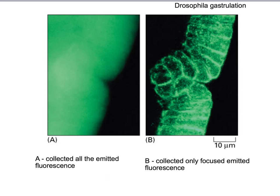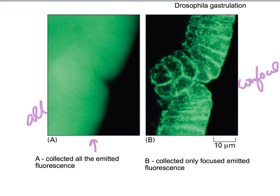Comparing wide-field fluorescence (collecting all emitted light) versus confocal (optical sectioning) shows a dramatic difference in image quality. The confocal image reveals clear internal structure, including what appears to be the invagination of the gastrula during Drosophila embryo formation. We can really see three-dimensional structure now. Confocal microscopy gives us great resolution and allows visualization of intracellular organelles that would otherwise be obscured by out-of-focus blur.